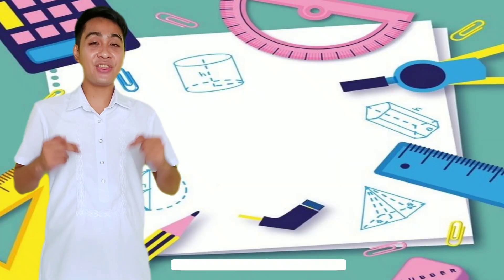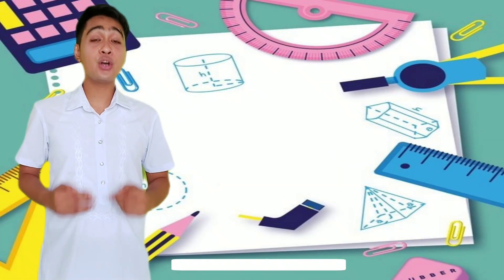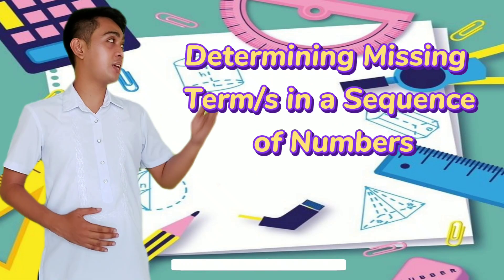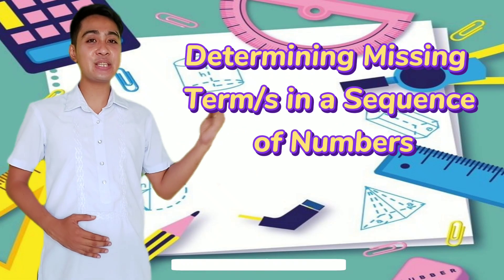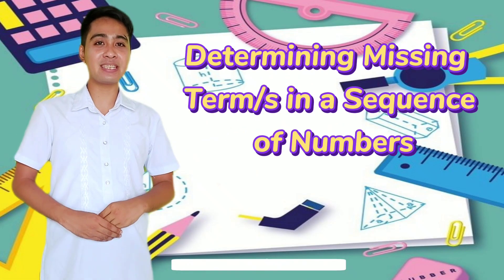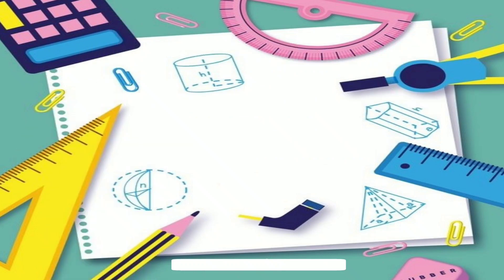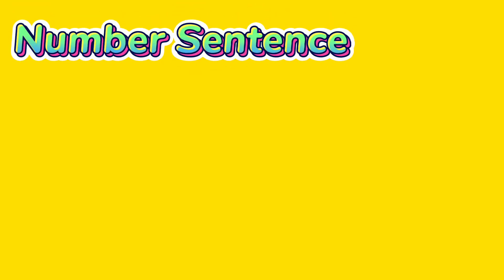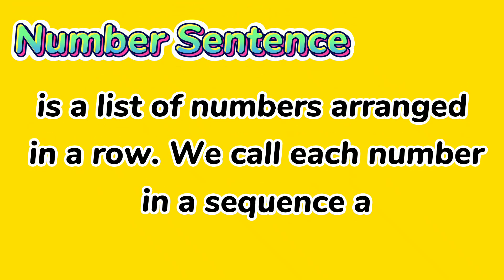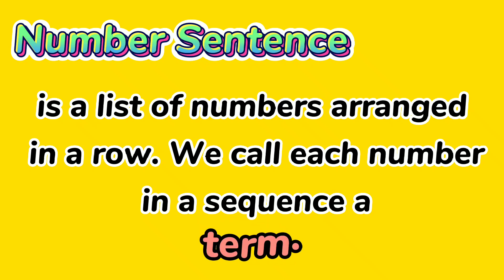In this video, you will learn how to determine the missing term or terms in a sequence of numbers. A number sequence is a list of numbers arranged in a row. We call each number in a sequence a term.